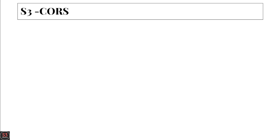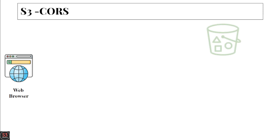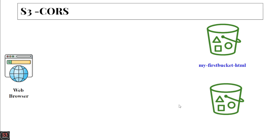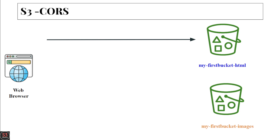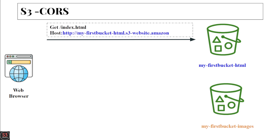Now for a real-time example of CORS: we have a web browser, a first bucket called 'my first bucket' storing all HTML pages, and a second bucket storing images referenced by those HTML pages. The web browser makes a GET request to the first bucket specifying the host, and the bucket responds with the index.html file.